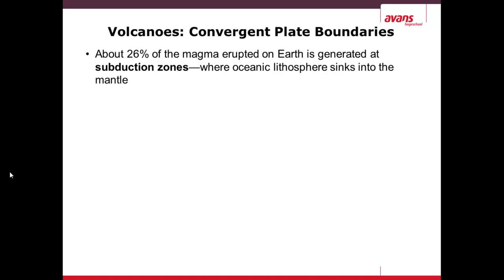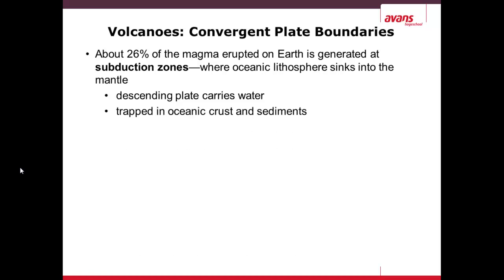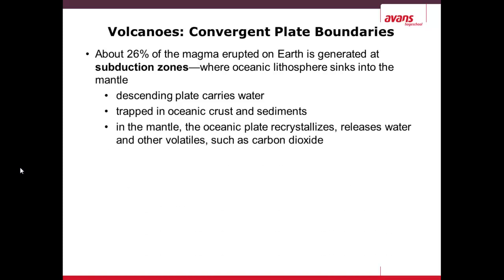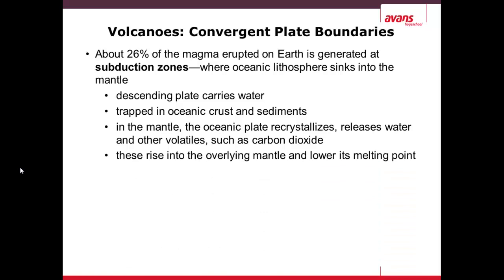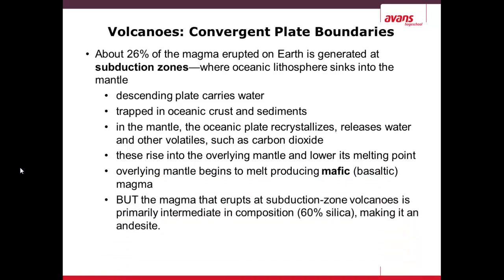Convergent plate boundaries are less common — approximately 26% of the magma erupted on Earth is from a subduction zone, where oceanic lithosphere sinks under the mantle. A descending plate carries liquid water underneath the other plate. It is trapped at very high pressures and temperatures, forming steam. It releases water and recrystallizes volatiles such as carbon dioxide. This produces mafic magma, but the magma can change as it rises through the subduction zone volcano, because these are primarily intermediate in composition — around 60% silica.